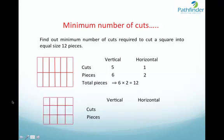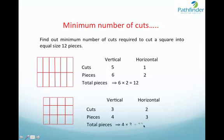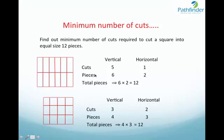Now, let us apply 3 cuts vertically and 2 cuts horizontally. 3 cuts give 4 pieces and 2 cuts give 3 pieces, so total = 4 × 3 = 12. We see that as the number of vertical cuts and horizontal cuts become closer to each other, the number of pieces are maximized. In the third case, we generated 12 pieces with only 5 cuts. First case: 11 cuts. Second case: 5 vertical + 1 horizontal = 6 cuts. Third case: 3 vertical + 2 horizontal = 5 cuts.